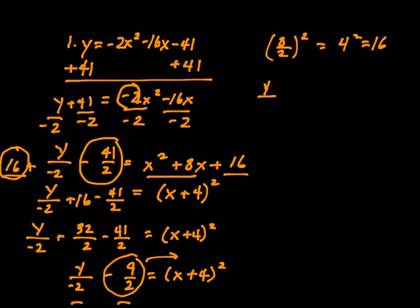So we have y divided by negative 2 equals x plus 4 squared plus 9 halves because we just moved that to the other side. We keep this intact, guys. Do not do anything with it. We're trying to put in vertex form. Oops, I didn't put a negative here.